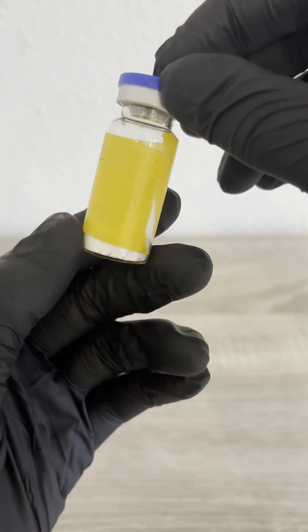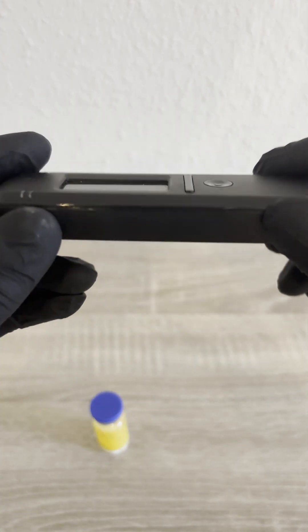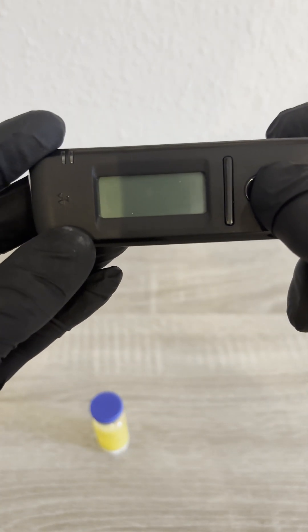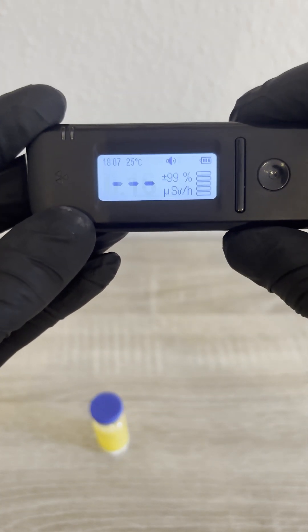The isotope thorium-232 decays very slowly with a half-life of over 14 billion years, but it produces a whole chain of radioactive daughters.